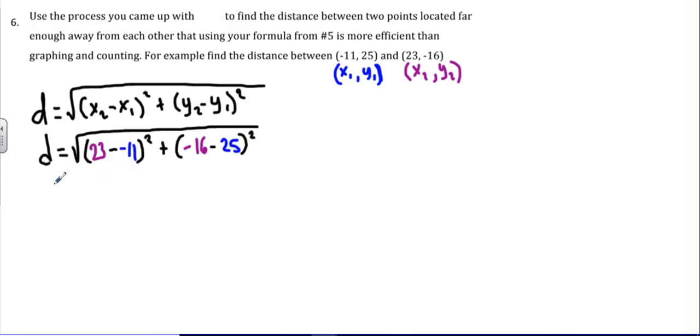Okay, now we can simplify this. So to simplify this side of the equation, we need to start with what's in the parentheses. Then we'll need to do the squares. Then we can add. And then we'll take the square root. All right, so 23 minus a negative 11. Subtracting a negative is just like adding. So 23 plus 11 is 34. So I have 34 squared plus, and then negative 16 minus 25 is negative 41. And we'll need to square that.